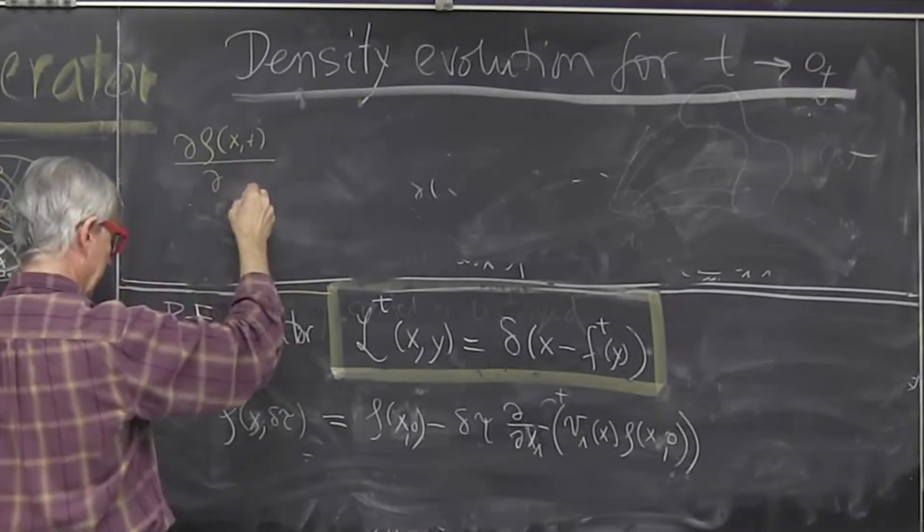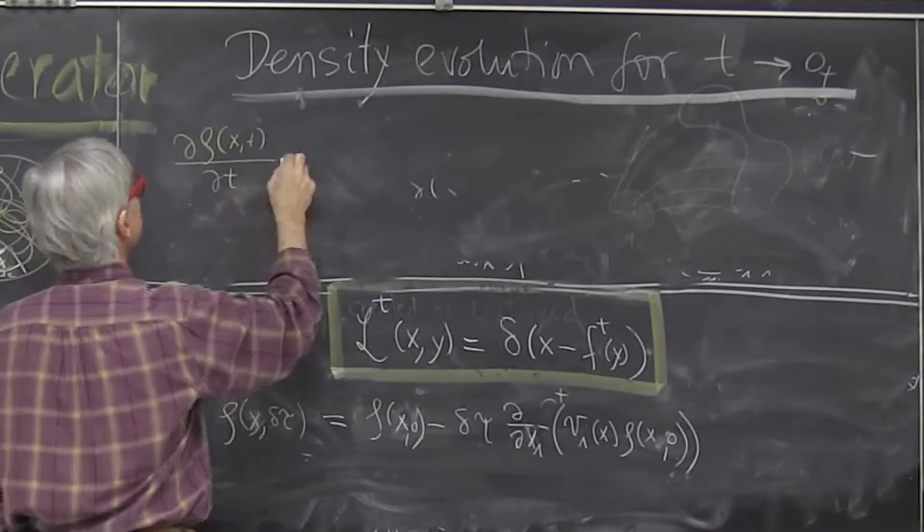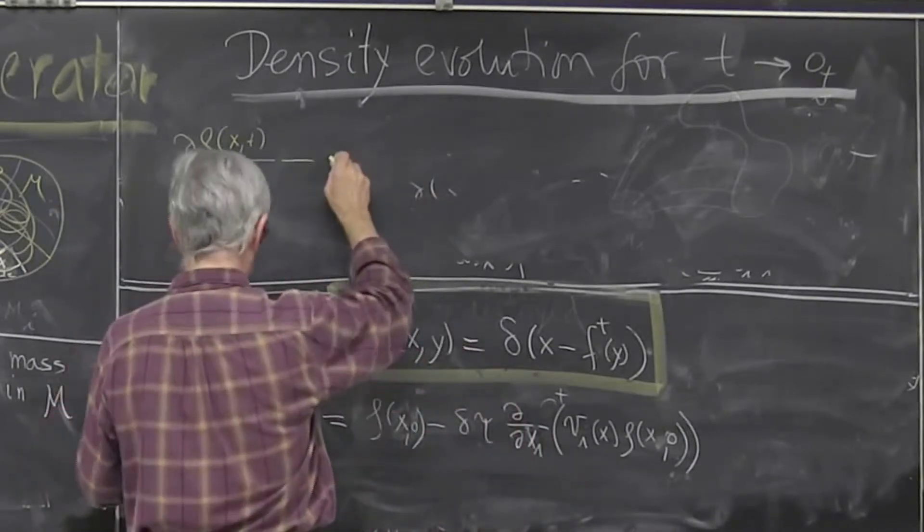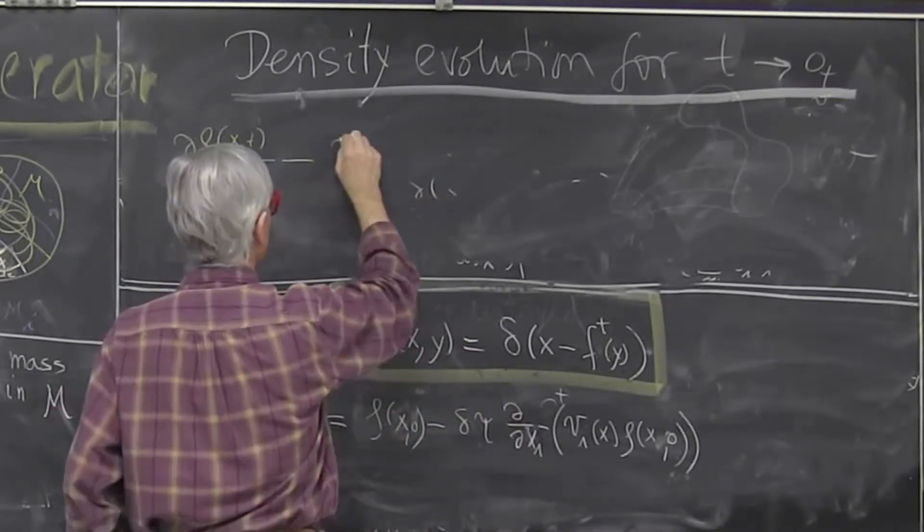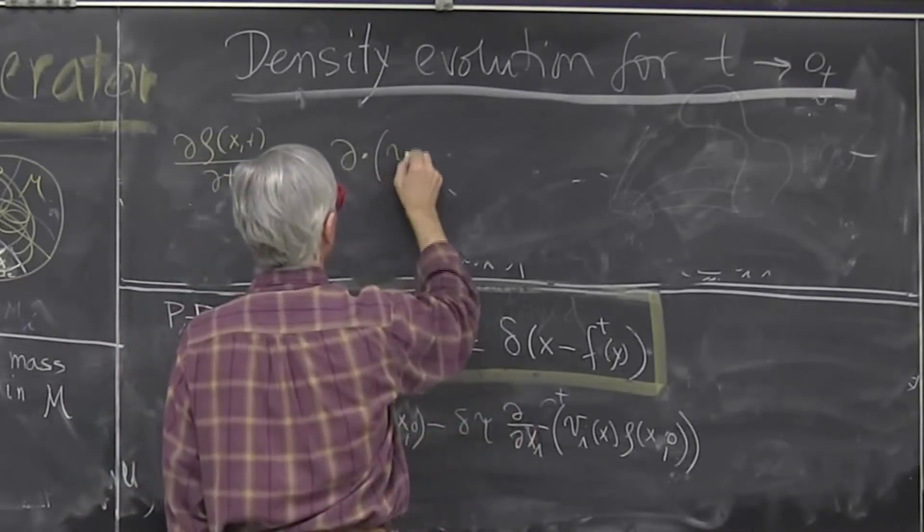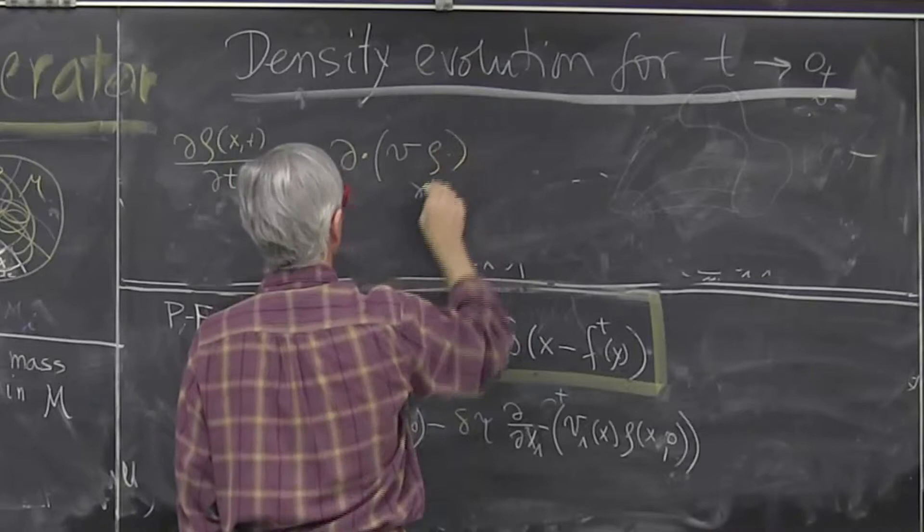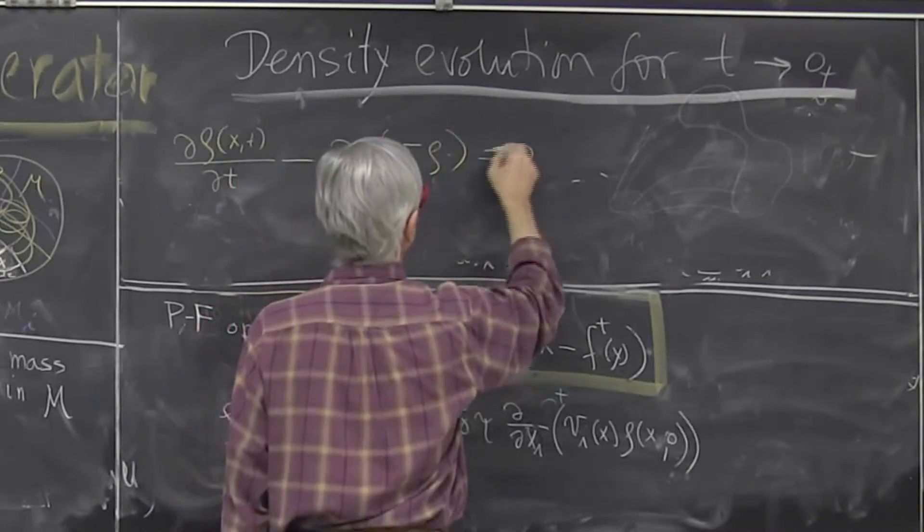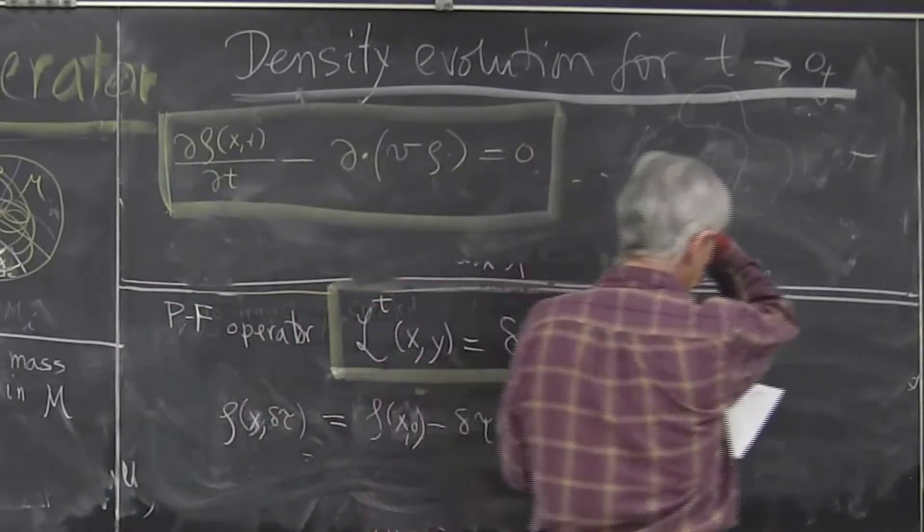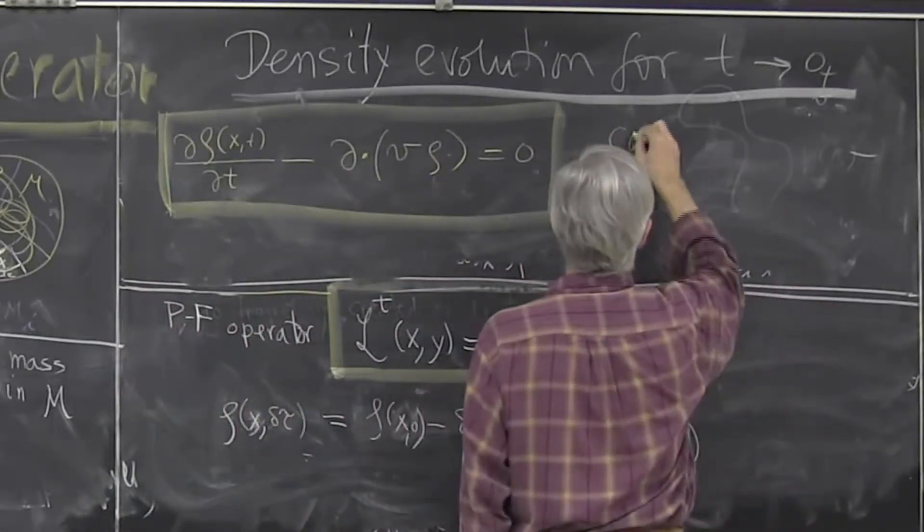You know, 0, but it could be any other time. And then I put this on this side, and I get minus the gradient, this guy here, times velocity times rho equals 0. This is kind of cute. This is just continuity equation.